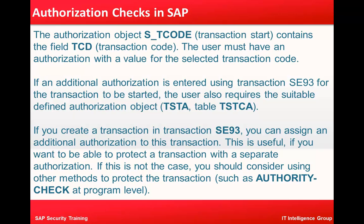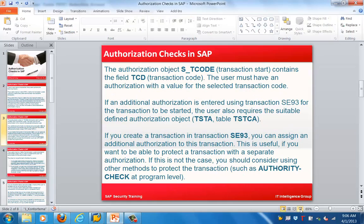That is the second check: the user should have the authorization for the T-code, meaning they should have the required roles. To create a custom transaction, we can go to AC93. If we assign it to AC93, the user requires a table-defined authorization object, which we can see through TSTA. If you create a transaction in AC93, you can assign an additional authorization to that transaction — this is useful if you want to protect a transaction with a separate authorization.